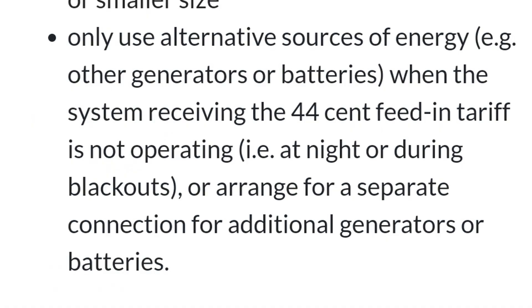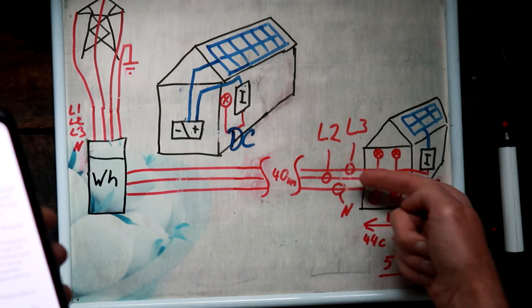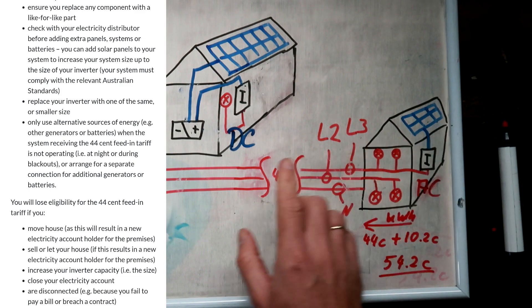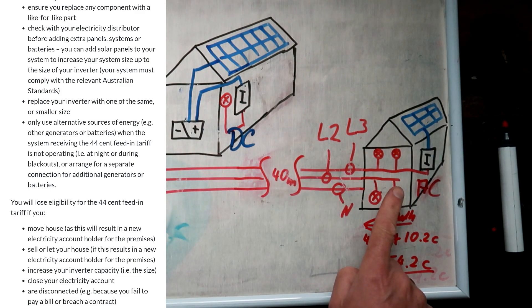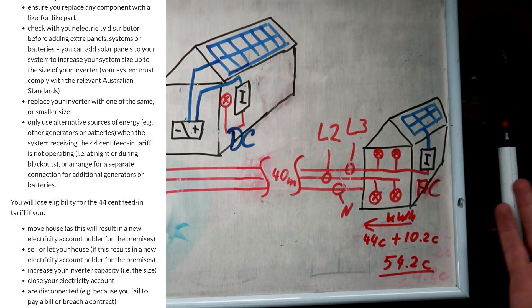So, and then I want to highlight these paragraphs, which can be found in each of these two parts of this website. Okay, let's start at the top again. So here we maintain eligibility for the 44 cent feed-in tariff. Here, last paragraph. Only use alternative sources of energy, for example generator or batteries, when the system receiving the 44 cents feed-in tariff, that is our solar system here, which receives the 44 cents when it operates, is not operating, for example at night or during blackouts.